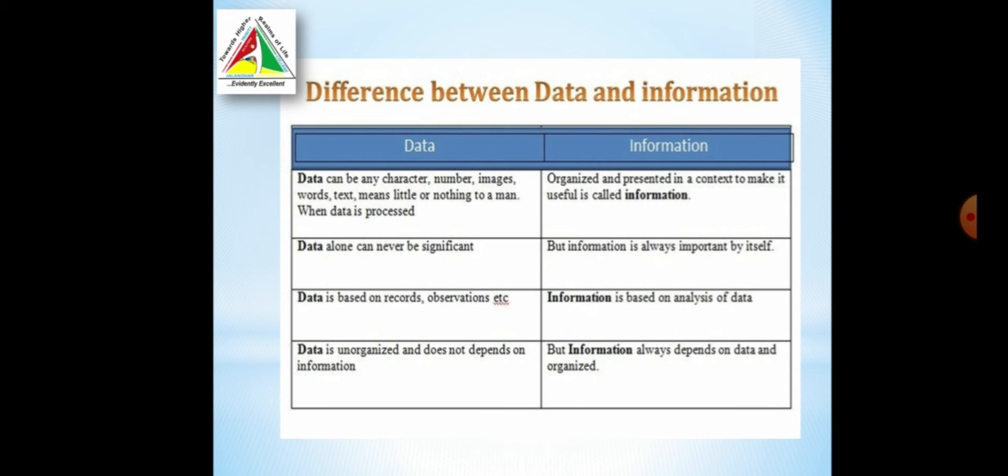Information is always based on data. After collecting the data, we process, then we get the information. Data is unrecognized, unorganized data. Data is unorganized fact and it is dependent upon information. But, information is always dependent upon data and information is organized data.